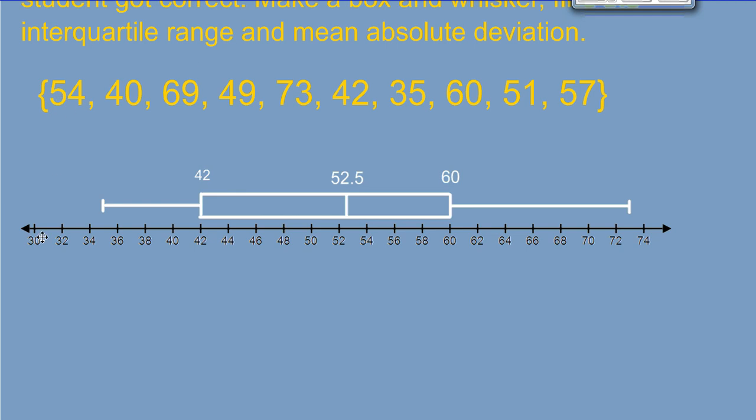And first, when you find the mean, you have to find the sum of all the numbers, which is 530. We take that divided by the number of pieces of data, which is 10, to get the mean of 53. Once you have the mean, then we're going to look at the distance from this number to the mean. 54 to 53 is 1 unit. From 40 to 53 is 13 units. From 69 to 53 is 16 units. From 49 to 53 is 4 units. From 73 to 53 is 20 units. And I will keep finding those distances.